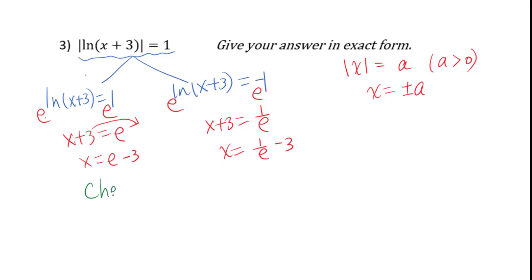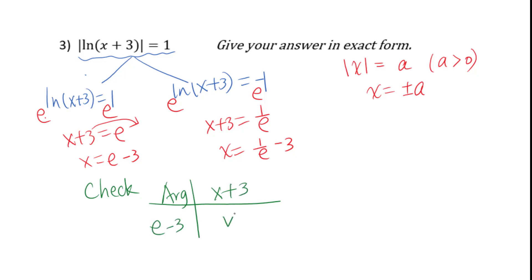Let's check: for the argument x plus 3 — (e minus 3) plus 3 equals e, which is positive. And (1/e minus 3) plus 3 equals 1/e, which is also positive. So we have two solutions: x₁ equals e minus 3 and x₂ equals 1/e minus 3.